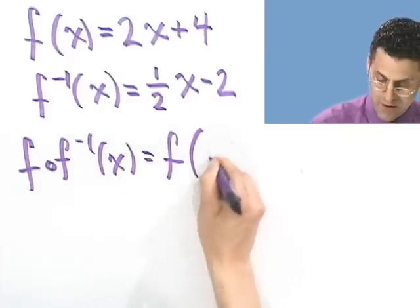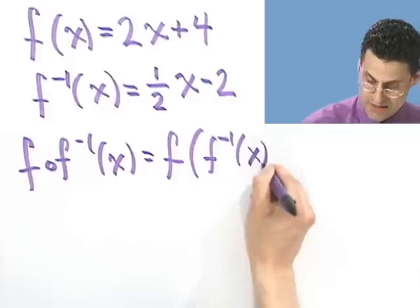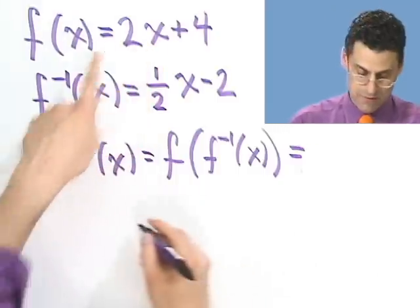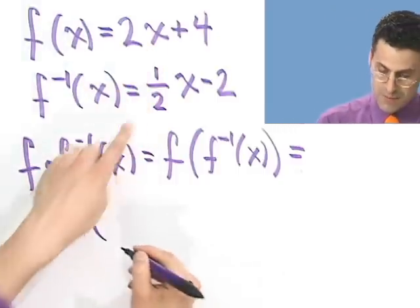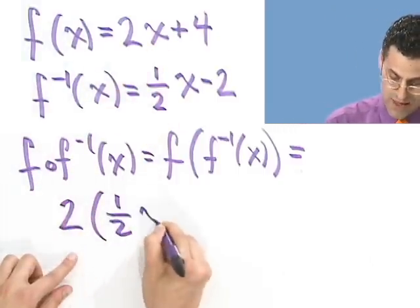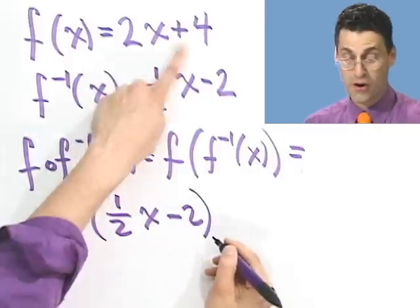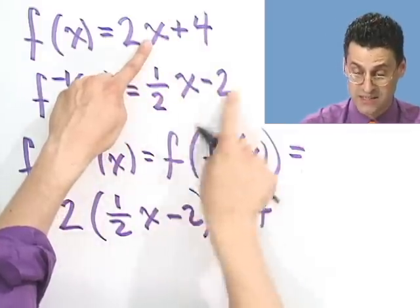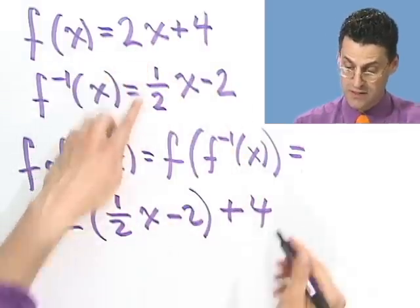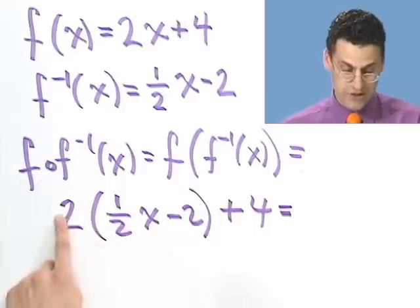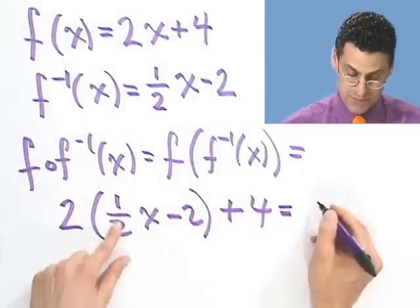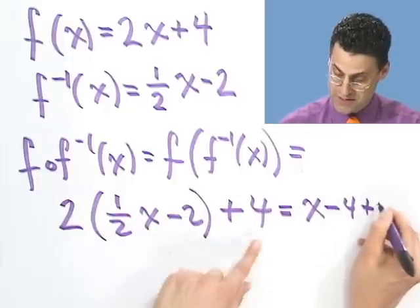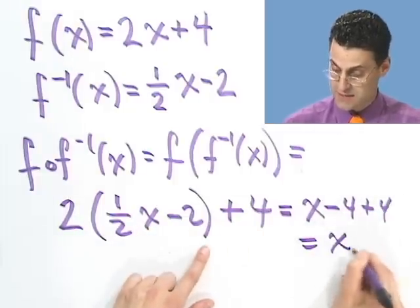Well, let's look at f composed with f inverse of x. That would be f of f inverse of x. Well, that means I take f inverse and stick it in for x in this function. So that would be 2 times f inverse, which is 1 half x minus 2, and then all plus 4. You see how I just took this function, and in place of x, I just stuck that right in? Now, what does that equal? Well, if I distribute the 2, I've got to distribute the 2 everywhere. I would see 2 times a half is just 1, x, and this is a minus 4 plus this 4, and that equals x. Well, that looks good. Are we done?